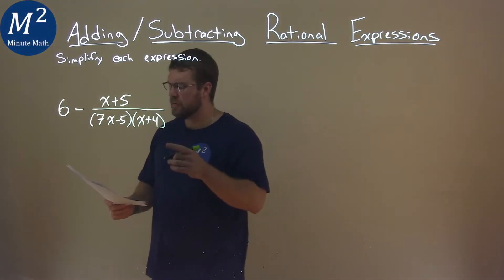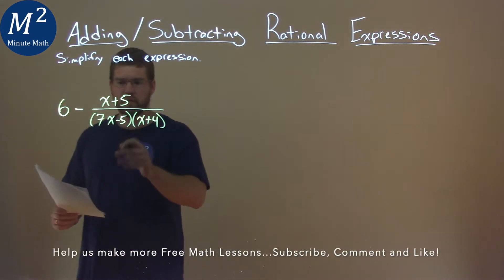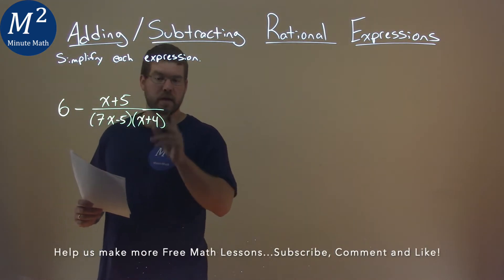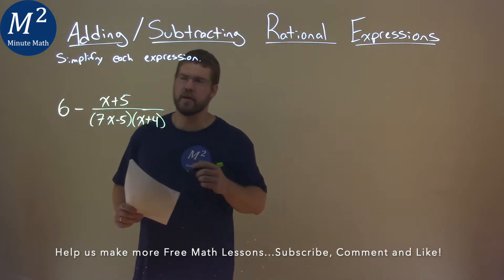We're given this problem right here: 6 minus x plus 5 over 7x minus 5 times x plus 4, and we've got to simplify this.